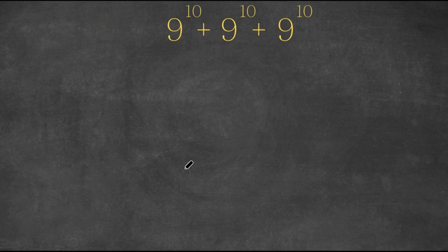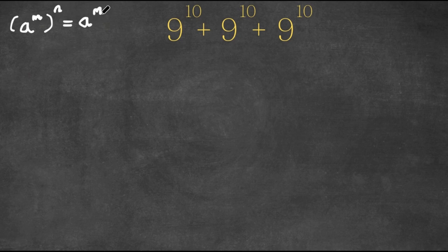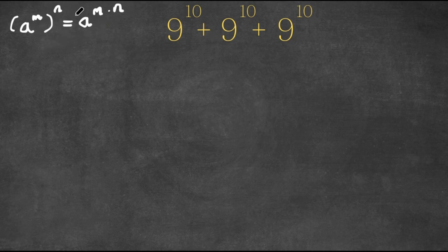Welcome back to Click Academics. In today's video I'm going to be teaching you guys how to solve this exponential problem. We have 9^10 plus 9^10 plus 9^10. Now, if we have something in the form a^m to the power of n, this can be written as a^(m times n), and vice versa: a^(m times n) can be written as a^m to the power of n.